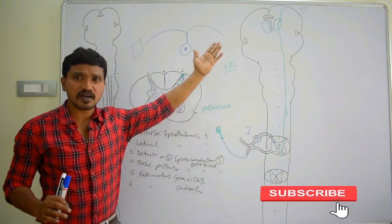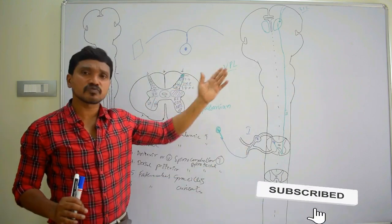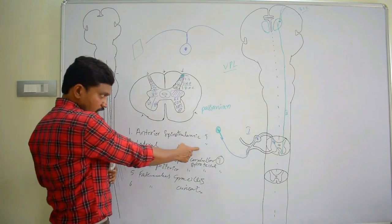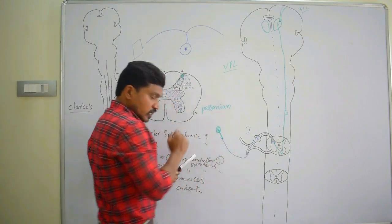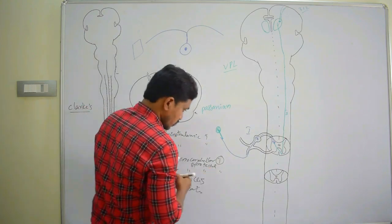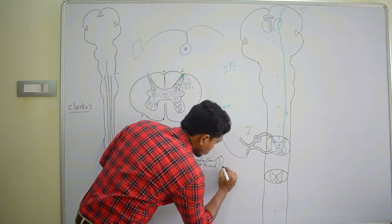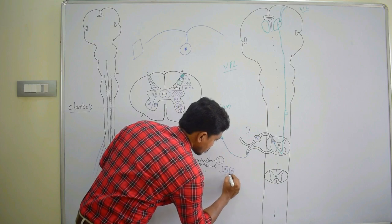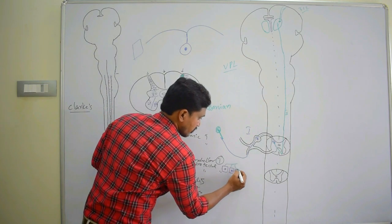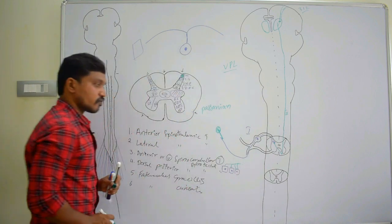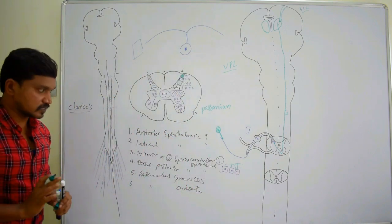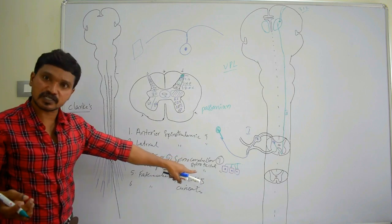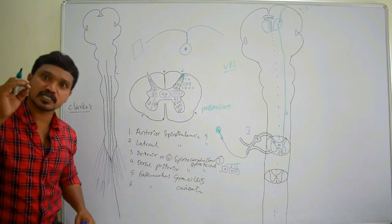First, second, and third order neurons and the course will be similar. When you take the lateral spinothalamic tract, first we should know the receptor. For pain, the receptor is free nerve endings. The lateral spinothalamic tract is not only carrying pain sensation; it is carrying temperature sensation also.